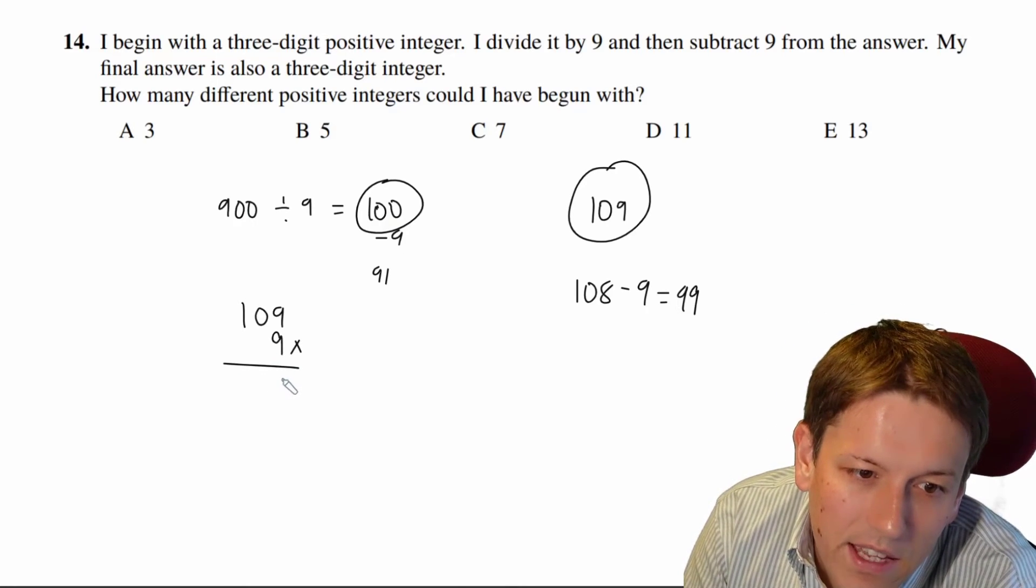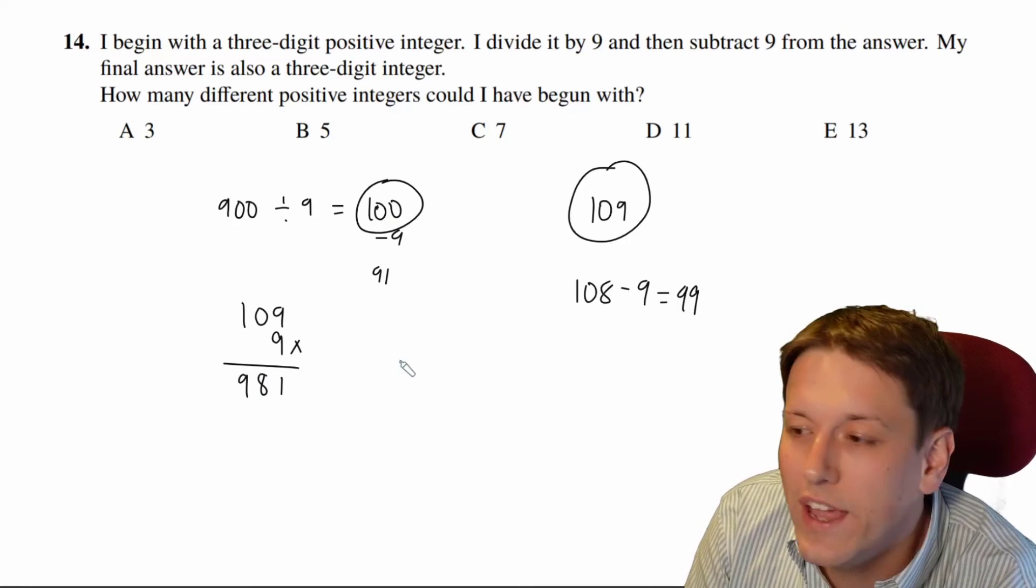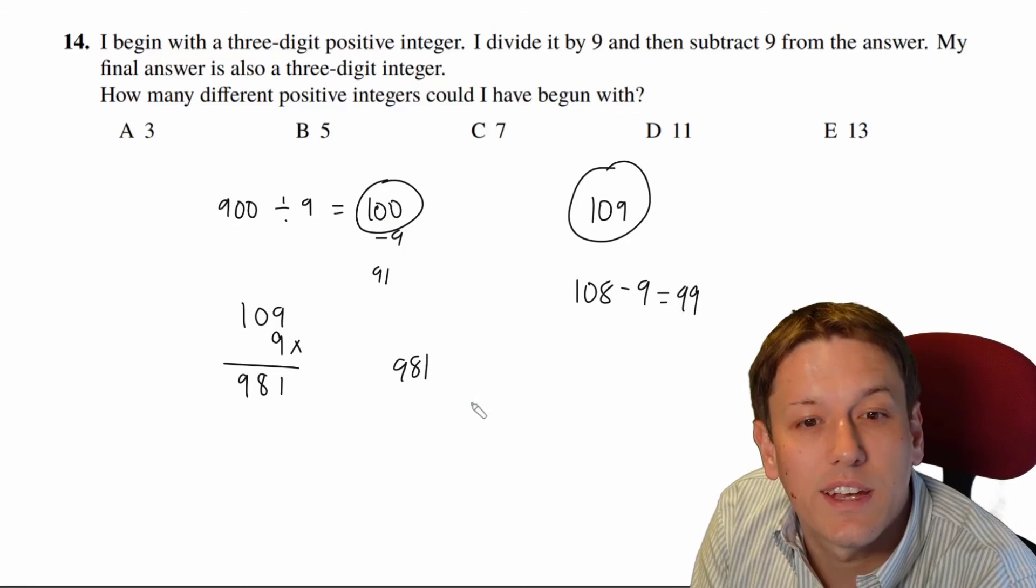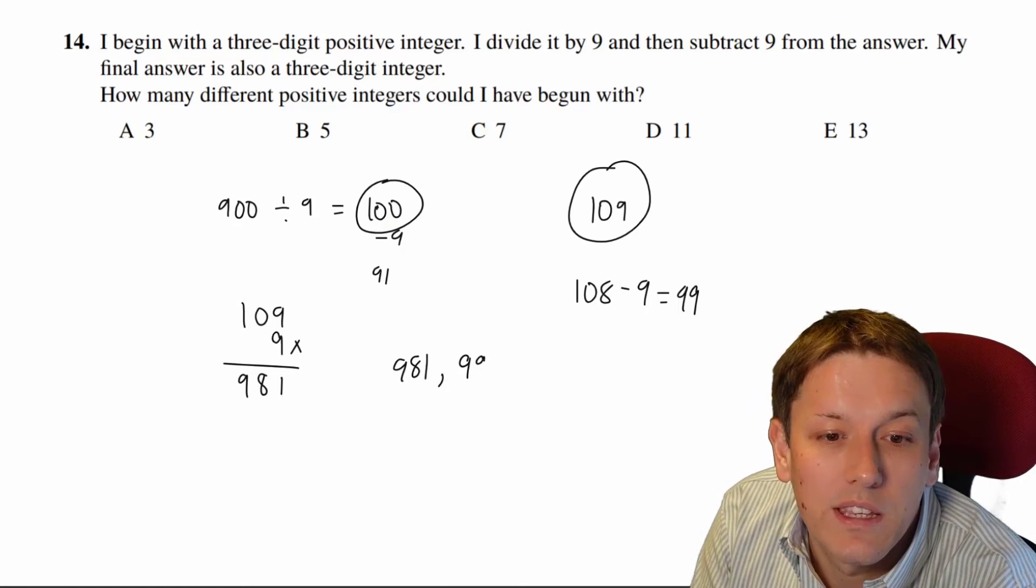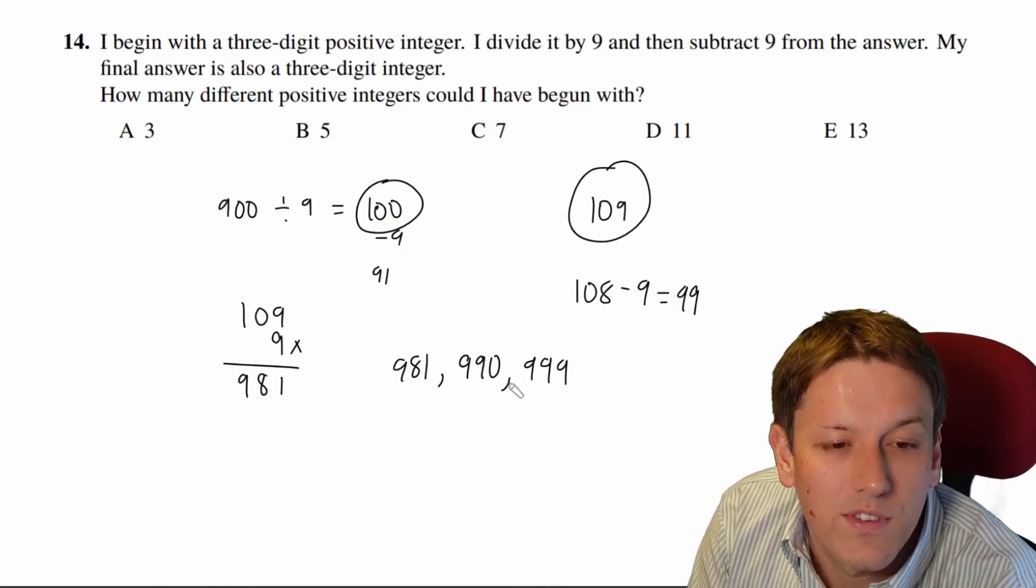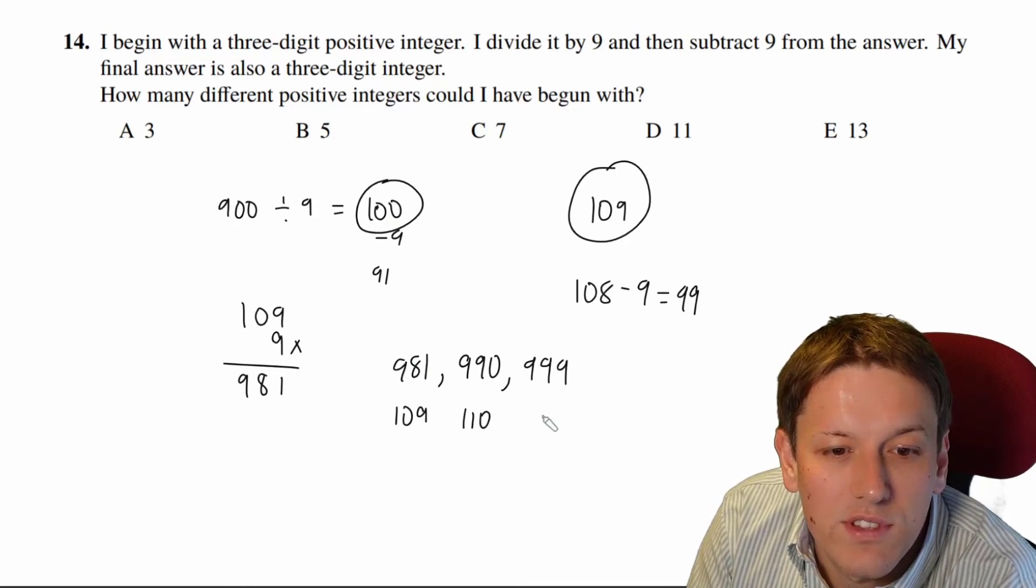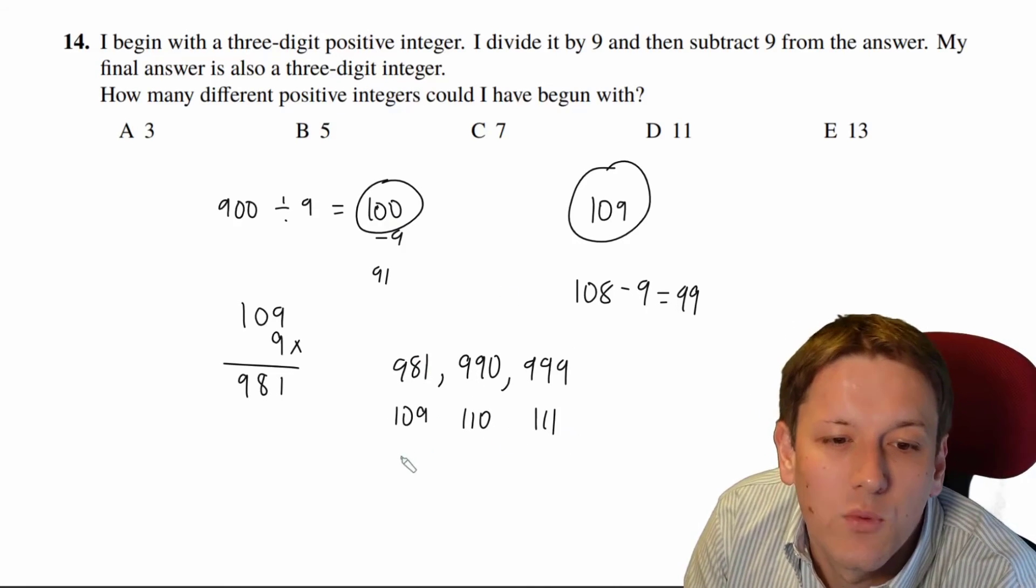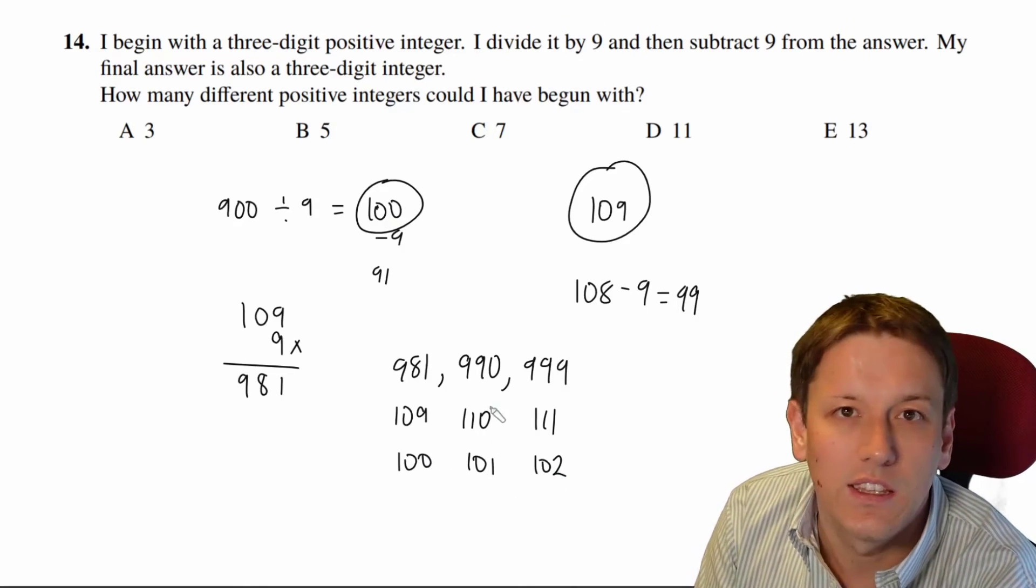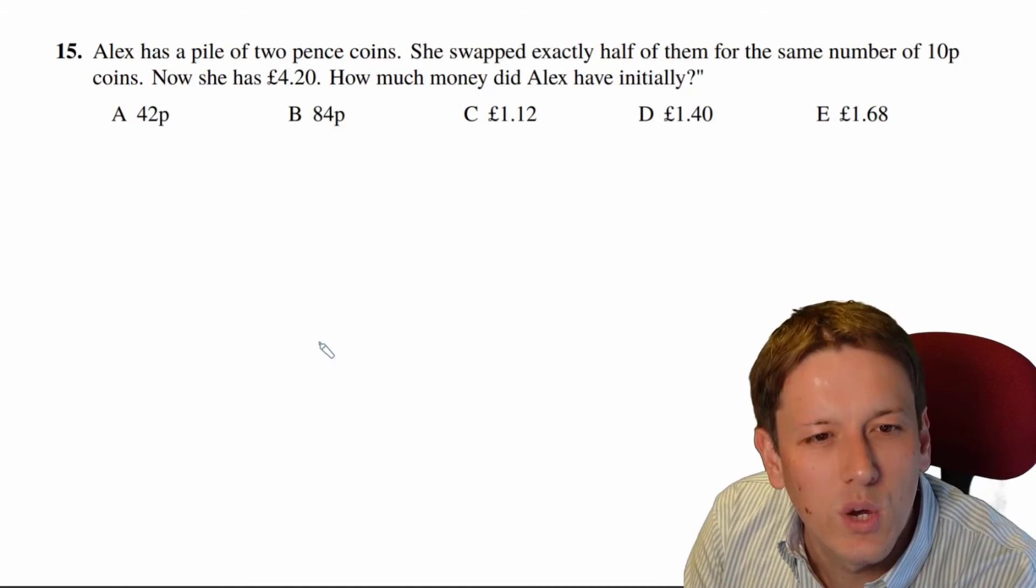So 981 is the smallest number that works here and we're only considering multiples of 9 so the next one that would work would be 990 which is 9 more and then 999 would also work. If you divide this one by 9 you get 109, this one you get 110, this one 111. When you subtract 9 you get 100, 101 and 102 and they are the only numbers that can work so the answer here is A, 3.